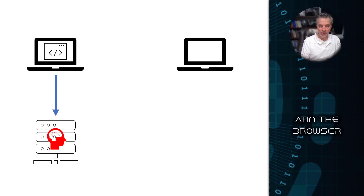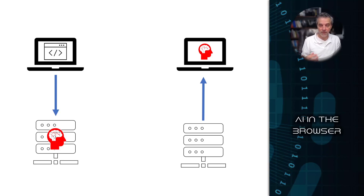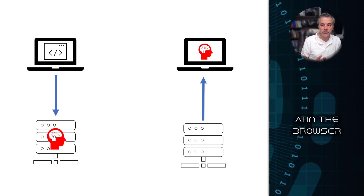What I'm going to be covering is more the inverse: the server delivers a model to the client — a laptop, desktop, or phone — and the model actually runs on that client. That delivery could happen in different ways: it might be installed with the application, or downloaded when the application loads. There are trade-offs, but it brings things closer to the edge, which is one of the main use cases for running AI in a browser context.